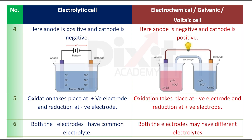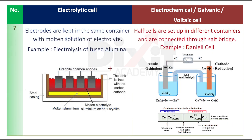Point number six: In an electrolytic cell, both electrodes share a common electrolyte. The electrodes are kept in the same container with a molten solution of electrolyte.